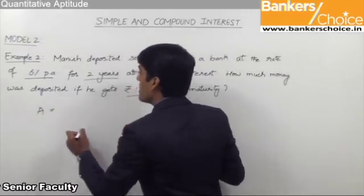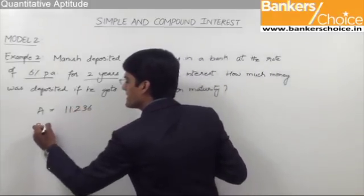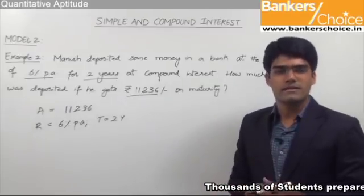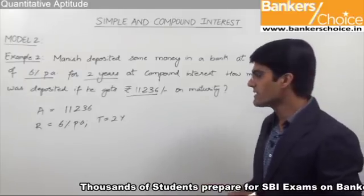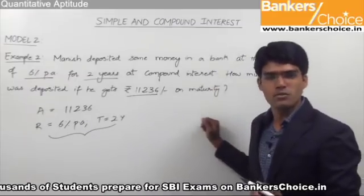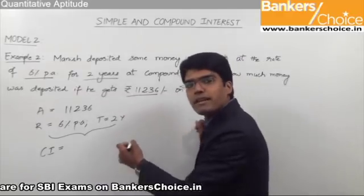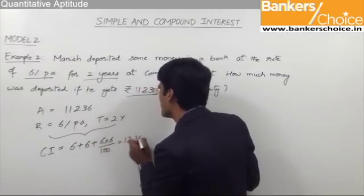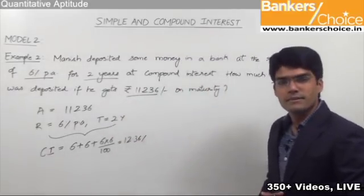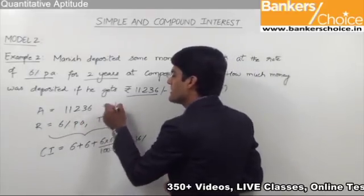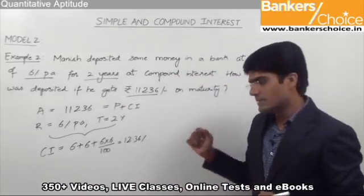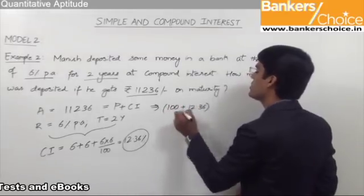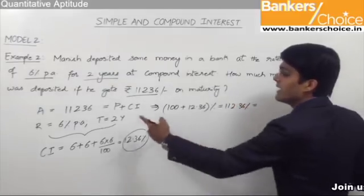Using the net or effective percentage formula to find CI for 2 years at 6%: a + b + ab/100 = 6 + 6 + (6 × 6)/100 = 12 + 0.36 = 12.36%. Since the total amount equals principal plus CI, it is 100% + 12.36% = 112.36%. So 112.36% equals ₹11,236.